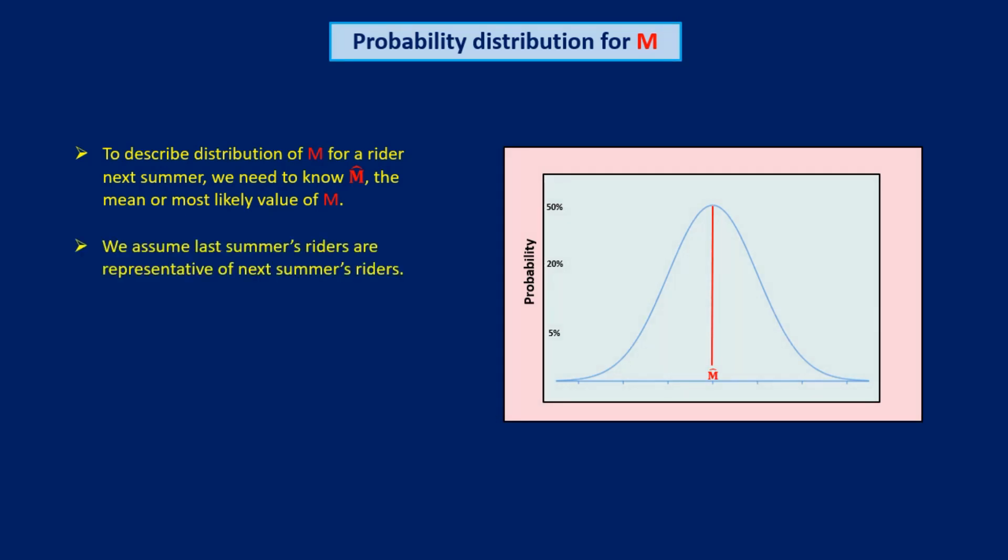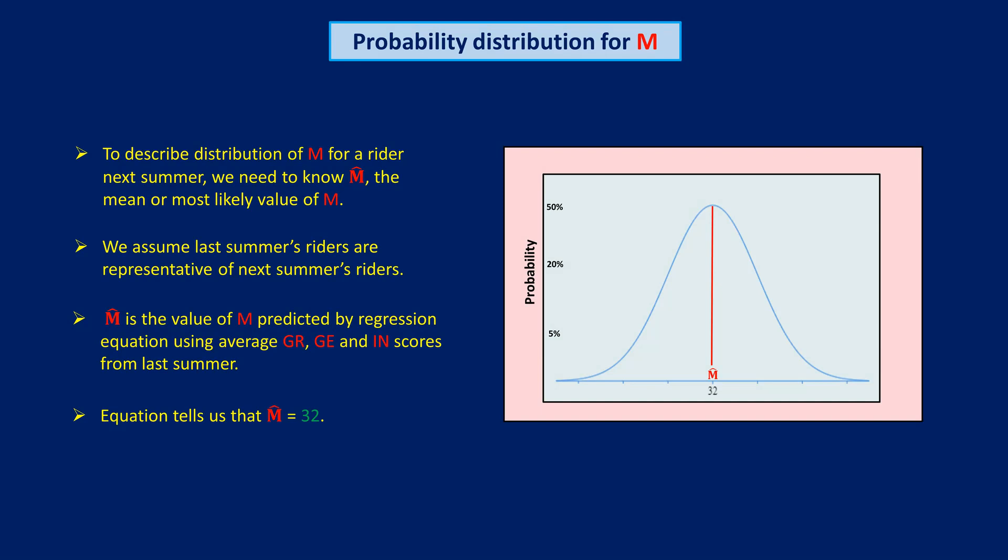Now, we are assuming that last summer's riders are representative of the population from which next summer's riders will be drawn. So let's take the average values of last summer's GR, GE, and IN scores, and plug them into our regression equation. The resulting value of M is the most likely value of M for any given rider next summer. And that turns out to be 32. So that's M-hat.